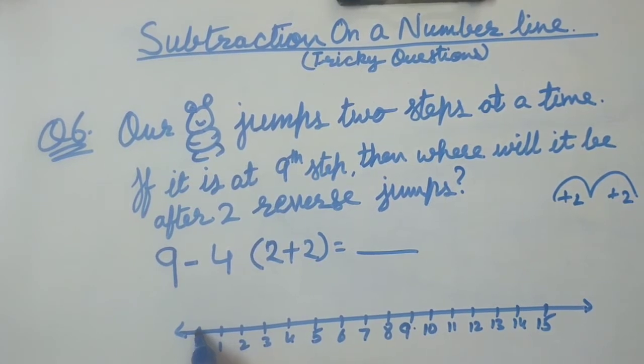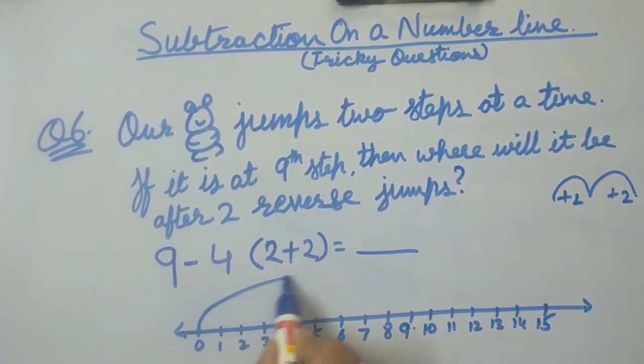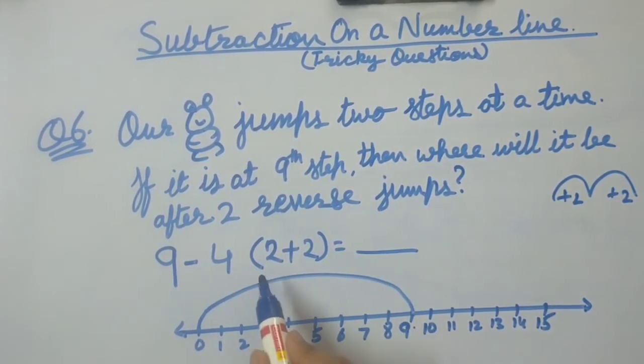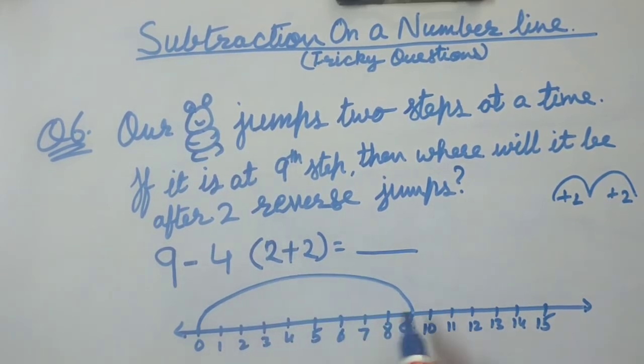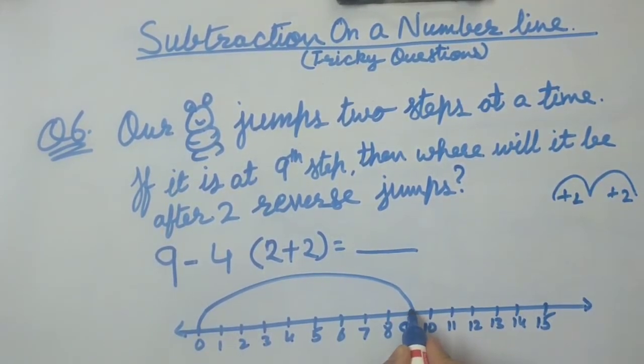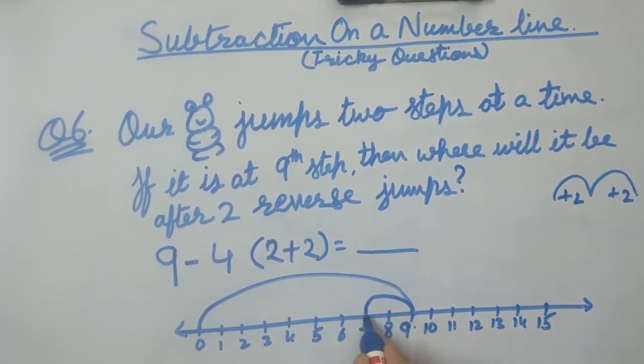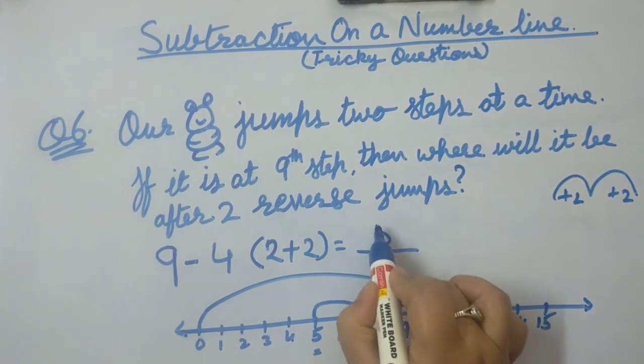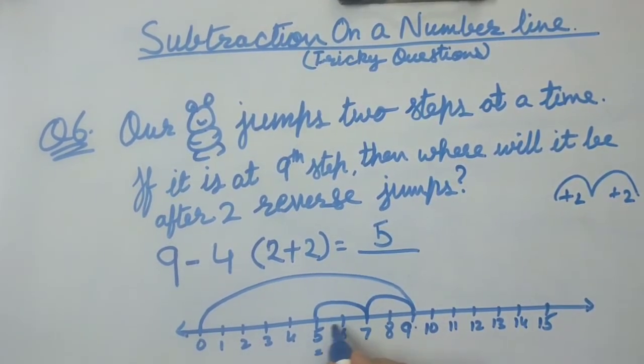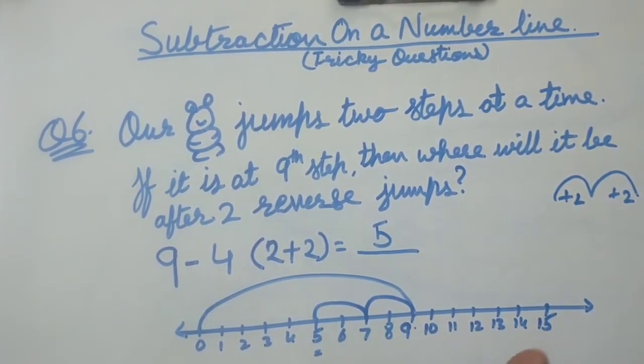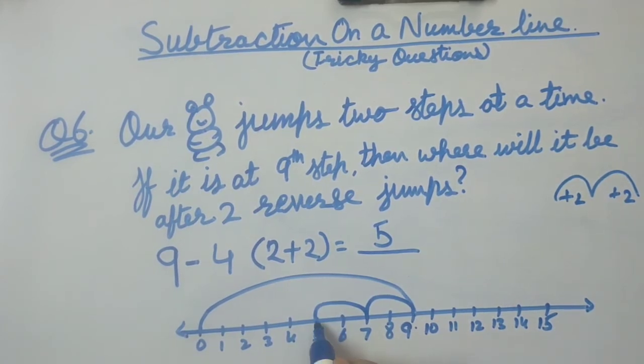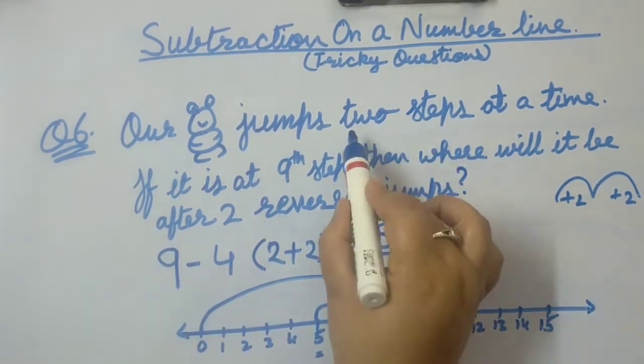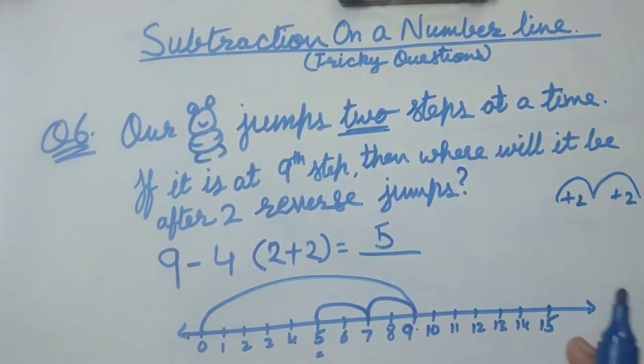Starting point is 0. Starting from 0 to 9. Then it took 2 jumps, that is minus 2 steps each. That is 9 to 7, and then 7 to 5. It reached at number 5. We have taken these 2 as 1, okay? 7 to 6, 6 to 5 we have taken as 1, because it jumps 2 steps at a time.